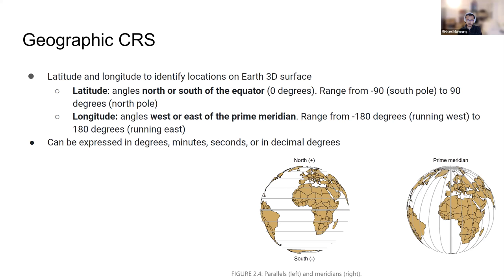For the geographic CRS, latitude measures angles north or south of the equator, ranging from -90 degrees at the South Pole to 90 degrees at the North Pole. Longitude measures angles from west to east of the prime meridian, ranging from -180 degrees running west to 180 degrees running east. The unit of distance can be expressed in degrees, minutes, seconds, or in decimal degrees.